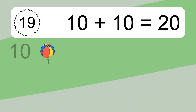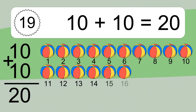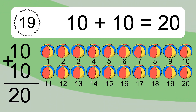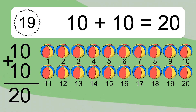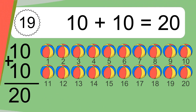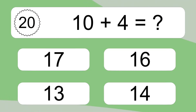10 plus 10 equals what? 10 plus 10 equals 20. Let's count it. 1, 2, 3, 4, 5, 6, 7, 8, 9, 10, 11, 12, 13, 14, 15, 16, 17, 18, 19, 20.